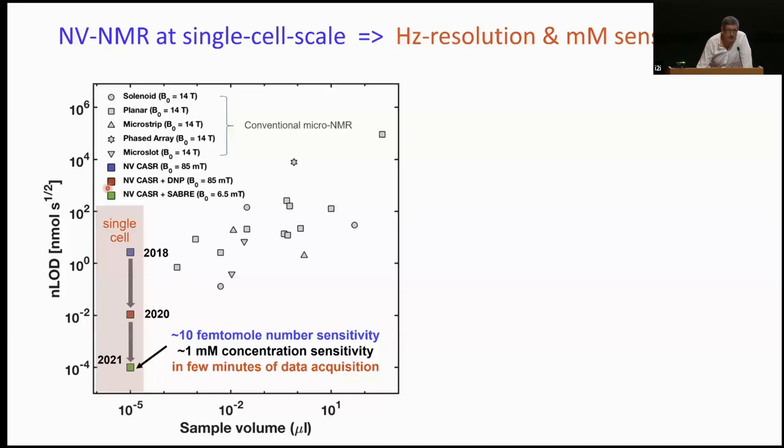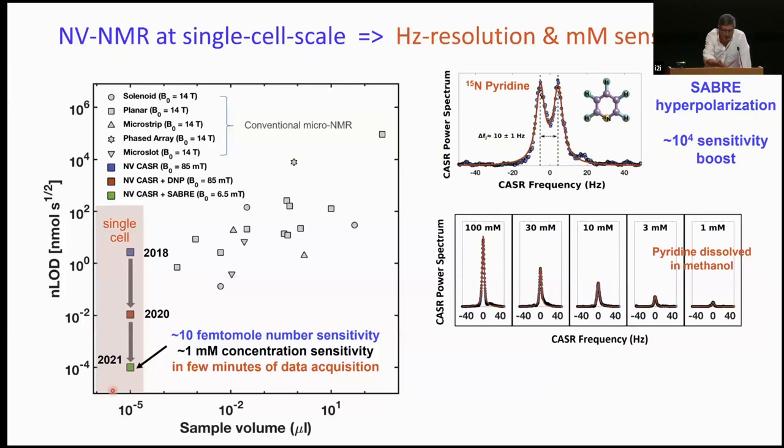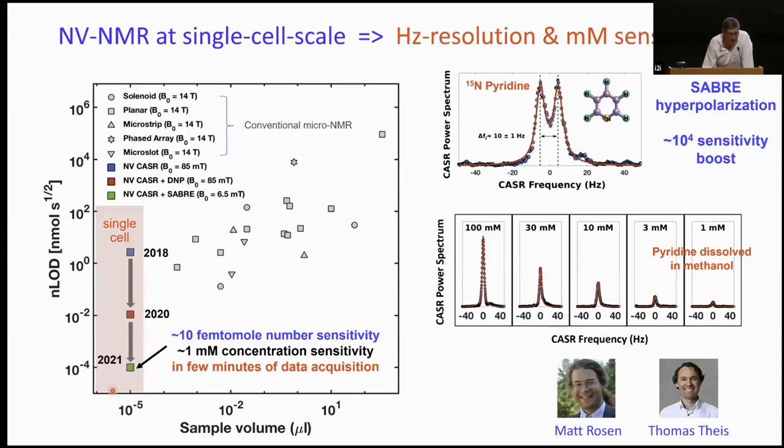And the pink rectangle is kind of like the volume of an individual cell, a typical cell. And at the upper limit, that's what the water concentration, the signal you get, and the number limit of detection. And over the course of several years, we first showed we could get into that small volume single-cell scale spatial resolution, get the spectral resolution that we wanted, and then improved the performance with a series of techniques. For example, we can see in this case J-couplings in a particular label form of pyridine using hyperpolarization, which gave us a big sensitivity boost, and we could go down and see about 1 millimolar concentration sensitivity. That work was collaborative with Matt Rosen and Thomas Tice.